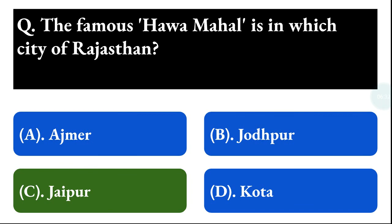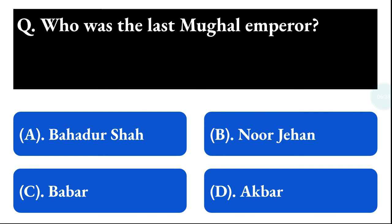Next question: who was the last Mughal emperor? Option A: Bahadur Shah, option B: Nur Jahan, option C: Babur, option D: Akbar. The correct answer is option A, that is Bahadur Shah.